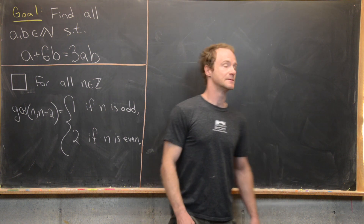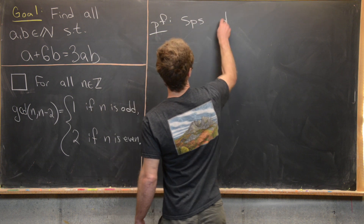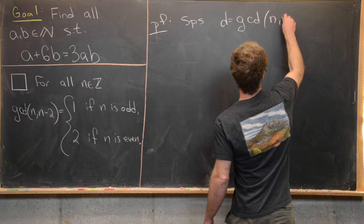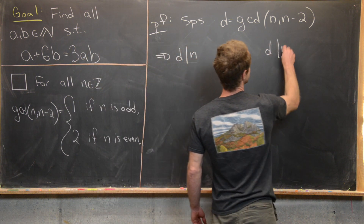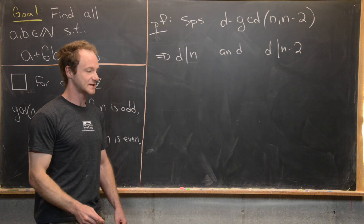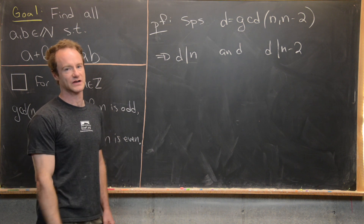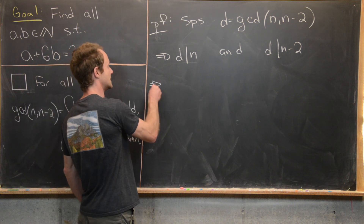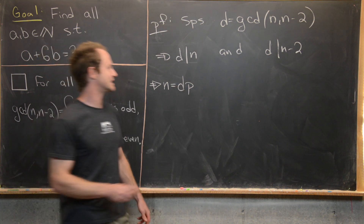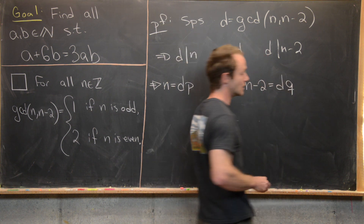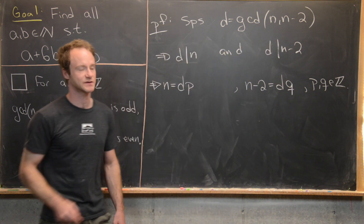So the proof of this tool is fairly simple. Let's suppose that D equals the GCD of n and n minus 2. That tells us that D divides n and D divides n minus 2. The fact that D divides n means n equals D times P for some integer P. And the fact that D divides n minus 2 means that n minus 2 equals D times Q for some integer Q. Here P and Q are integers because we're working over the integers.